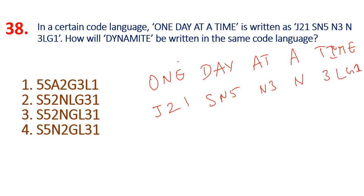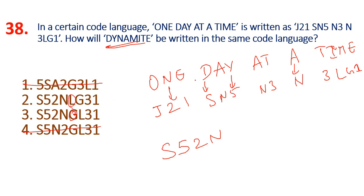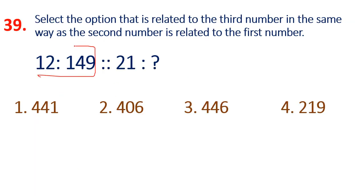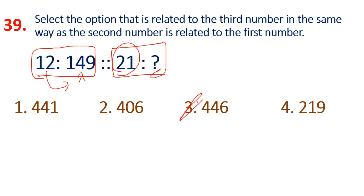For 'dynamite': D gets coded as S, Y as 5, N as N2, A as 2N, M as 3N, I as 4N, T as 5N, E as 6N. Then 21 squared is 441, plus 5 gives 446. The answer is 446. Reasoning questions are easy once you identify the pattern.